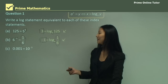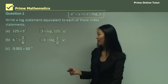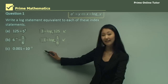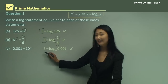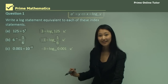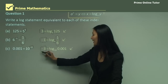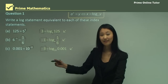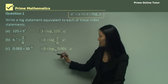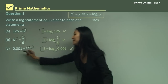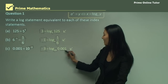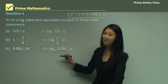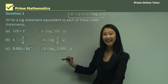In part c, we have 0.001 equals 10 to the power of minus 3. Changing that into logarithm form: the index, minus 3, goes over here. Then 10 is the base of the index, so 10 must also be the base of the logarithm. Finally, 0.001 moves over. So the answer is minus 3 equals log base 10, 0.001.